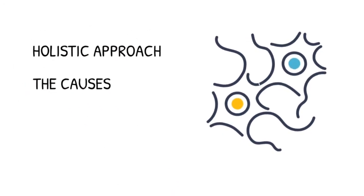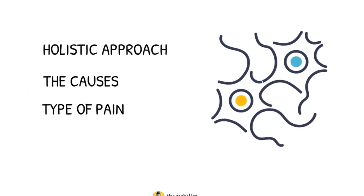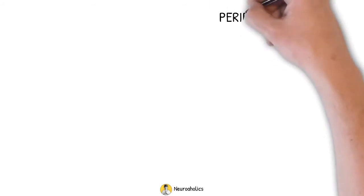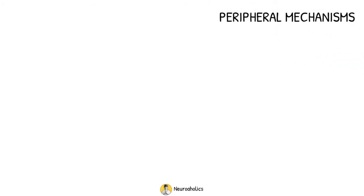Identification of the type of pain and assessment of the importance of its various components, and determination of appropriate treatment. Neuropathic pain syndrome can result from peripheral or central mechanisms. First, we're going to discuss peripheral mechanisms.